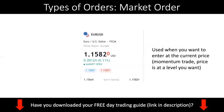So let's go through what a market order is first. A market order means that you are executing your trade at the current price. For example, EURUSD right now is trading at 1.15820 — that's the current trading price. A market order means that you want to buy or sell at the current price. There is a buying price and a selling price because there's a spread, but basically, a market order means you are buying at the current price.